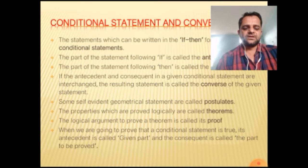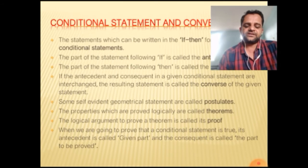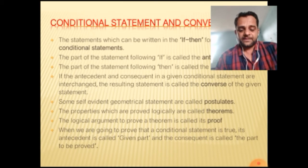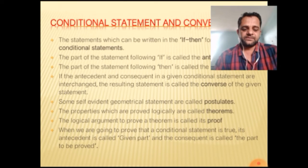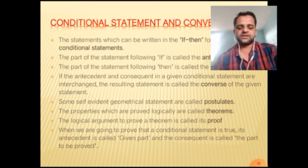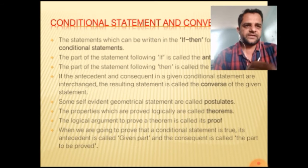A statement can be written in conditional form — for example: 'If the given quadrilateral is a rhombus, then the diagonals are perpendicular bisectors of each other.' Here, the rhombus part is the antecedent and the diagonal part is the consequent. Converse means interchanging the antecedent and consequent.